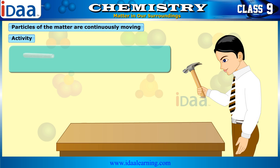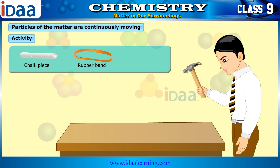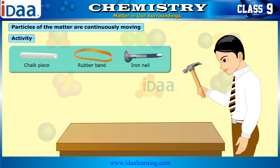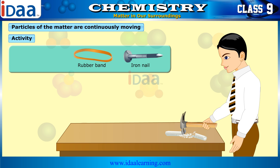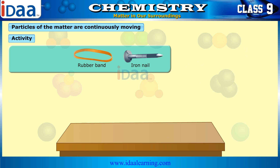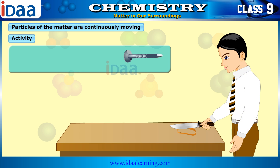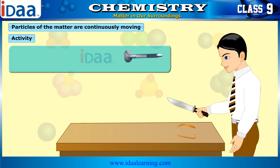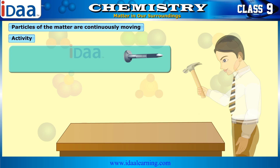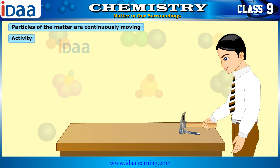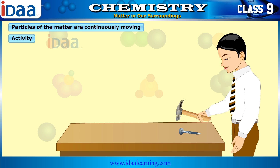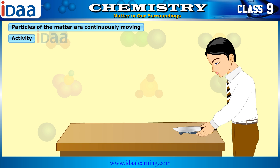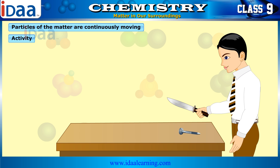For this activity, you will need a piece of chalk, a rubber band, and an iron nail. You will try to break the structure of these different substances. You will notice that it is easy to break the chalk with a hammer, and it is also easy to cut a rubber band with a blade. You will also find that it is extremely difficult to break or cut the nail with a hammer and a blade. From this, we conclude that the particles in iron are held together with the strongest force.